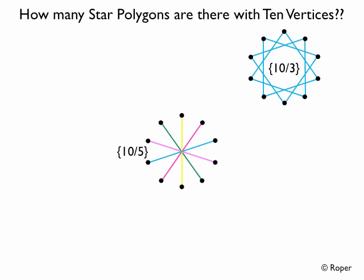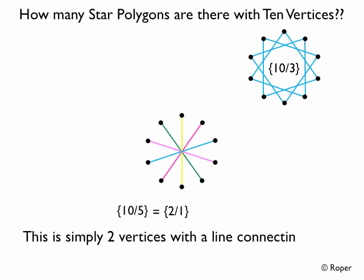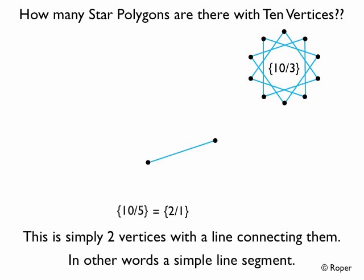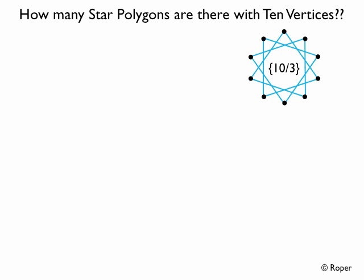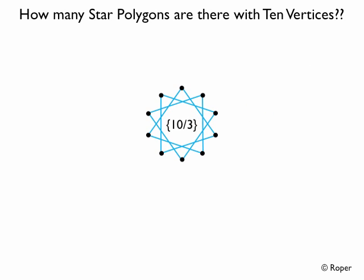Next, let's look at 10,5. If we reduce 10,5, it reduces to 2,1. And 2,1 is simply two vertices with a line connecting them — a simple line segment. So 10,5 is five of these simple line segments. This is not a star polygon with ten vertices, so we can take this off the board. So how many star polygons are there with ten vertices? There is only one.